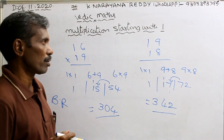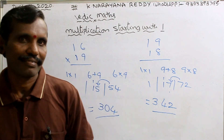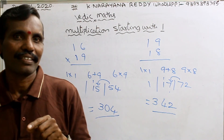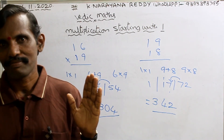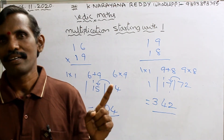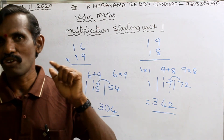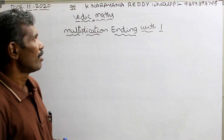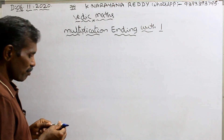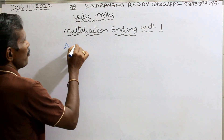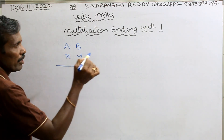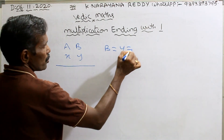Whenever a number is starting with 1, the math can be done in your brain — that comes only under practice. Practice makes perfect. We want to revise the problems again and again. Only then can you remember all the methods, all the tricks, all the logics in your brain. Now multiplication with numbers ending with 1. That means b equals to y equals to 1.